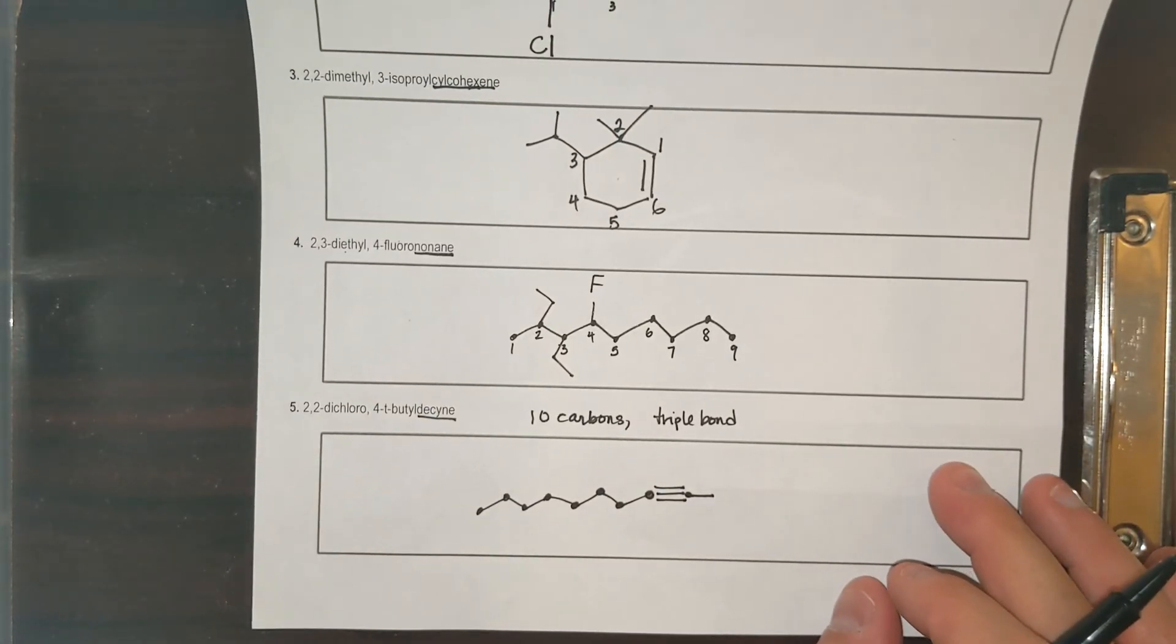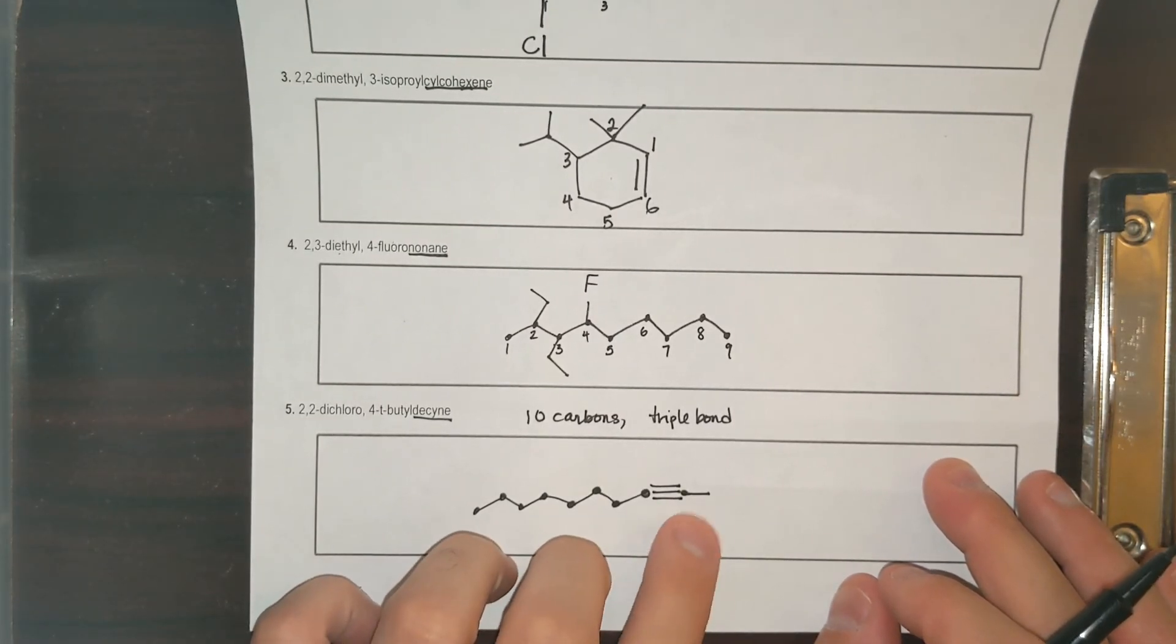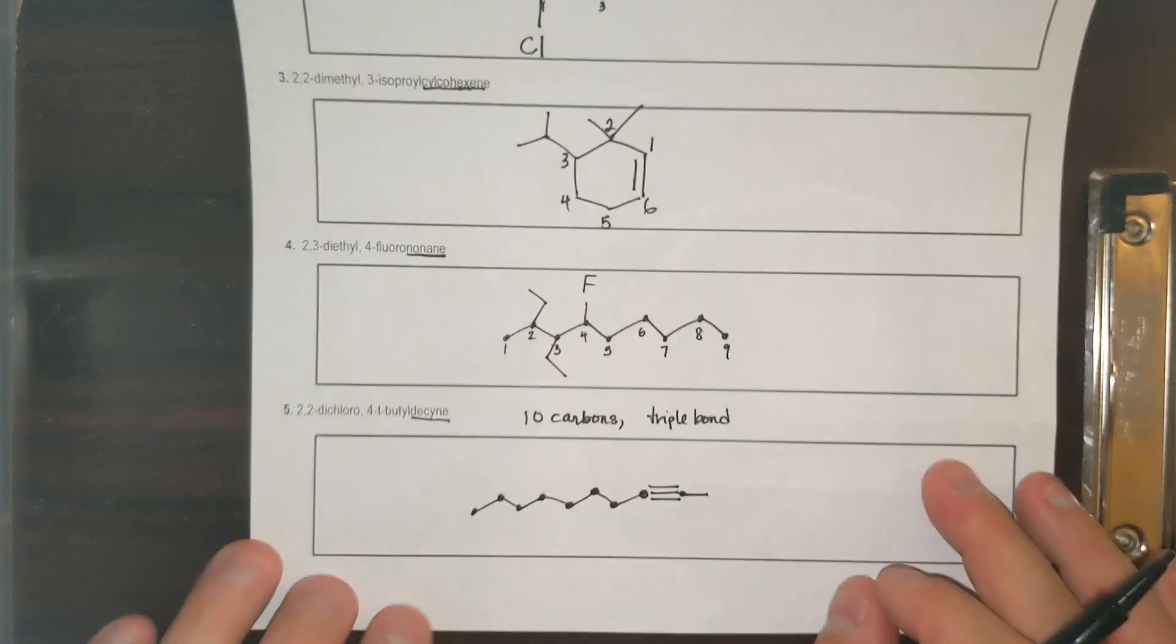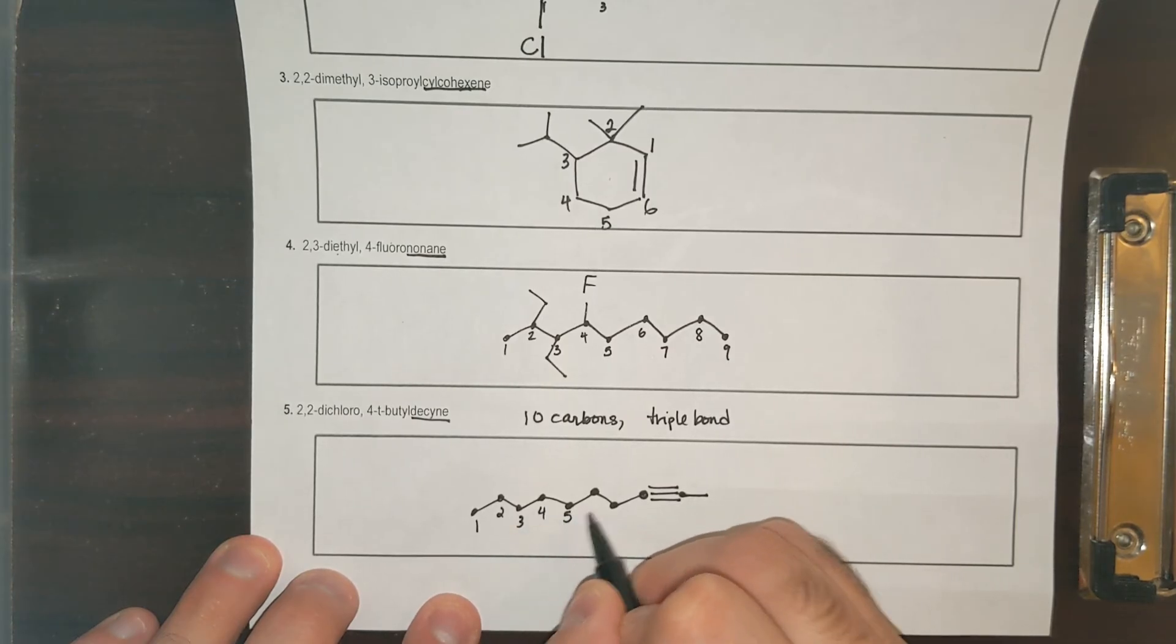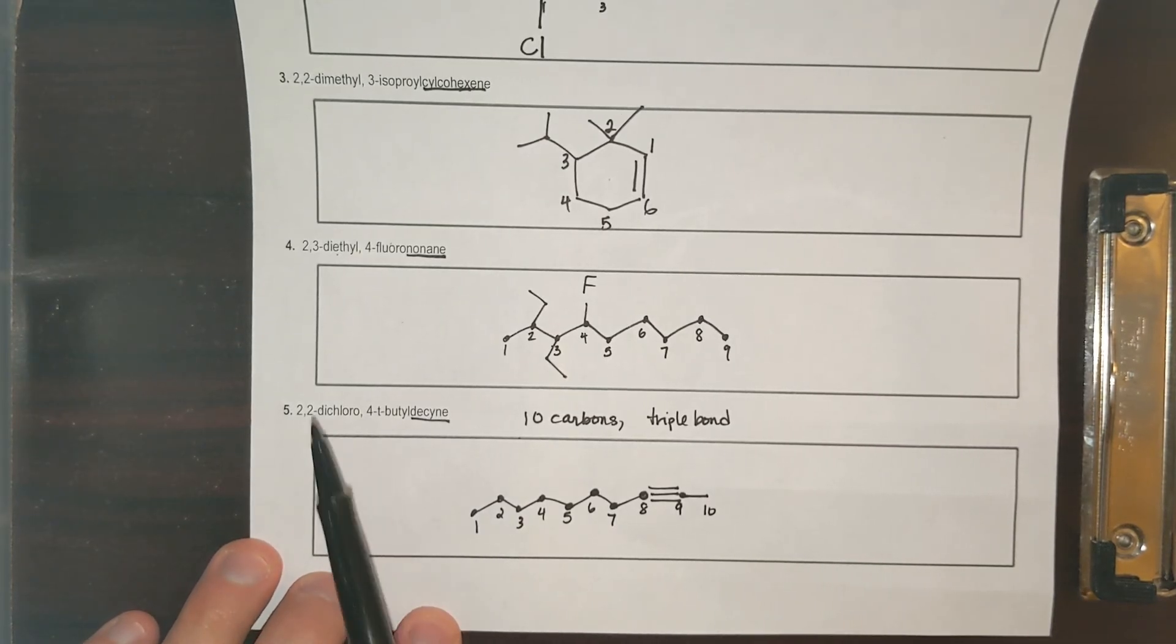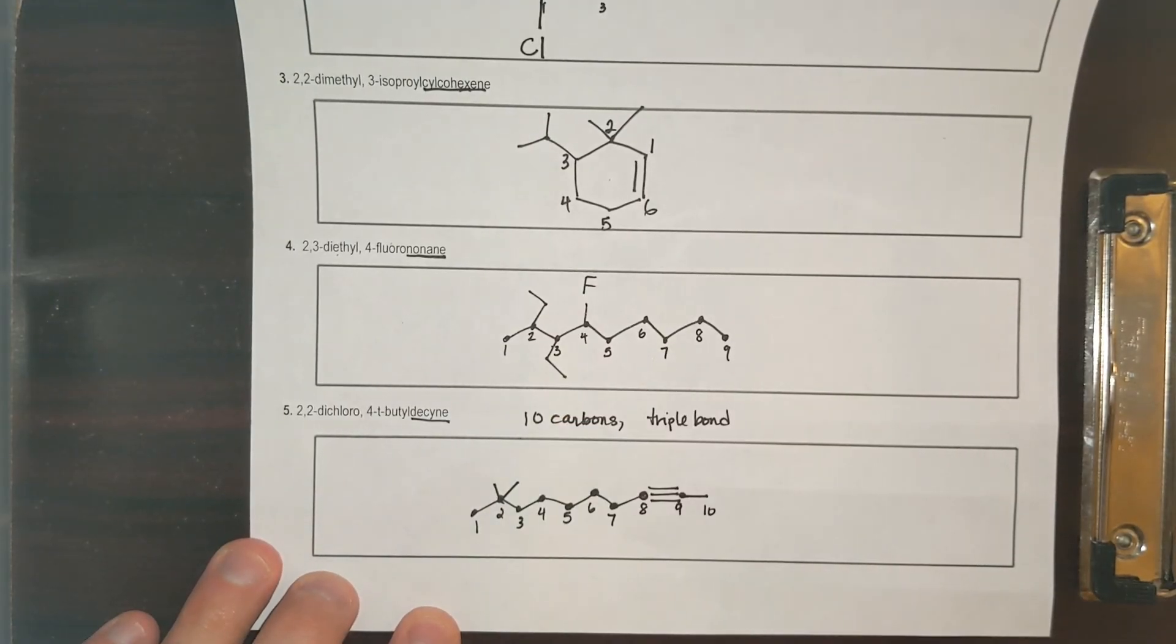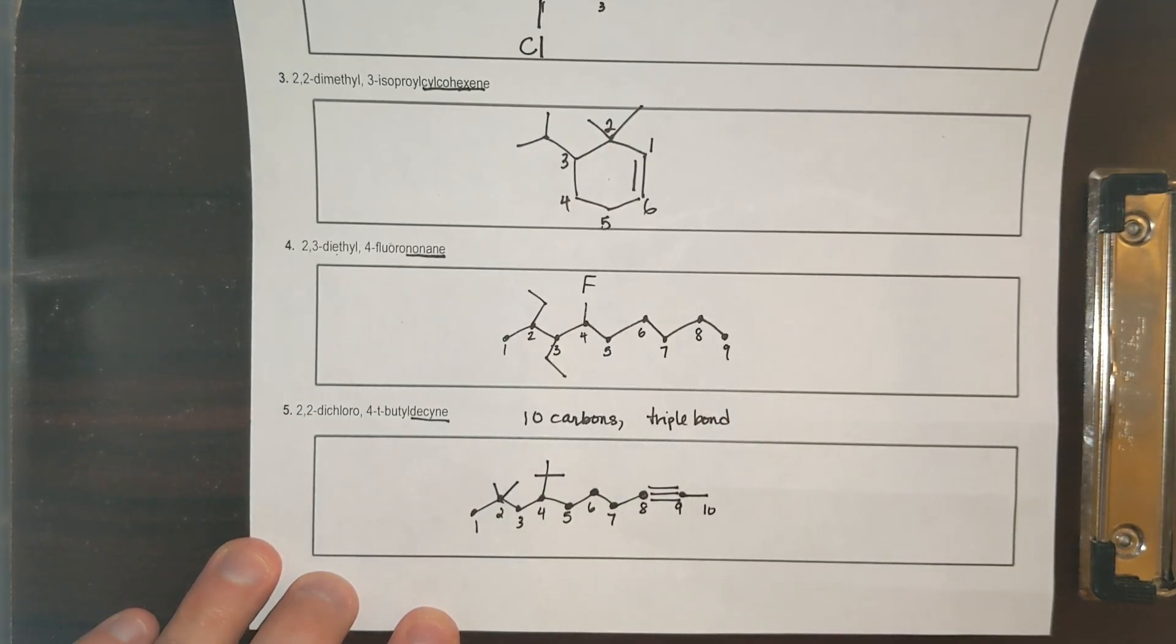Doesn't matter where you put the triple bond. Later on, we're going to number these a lot better. The counting is going to go around certain functional groups. But for right now, I'm going to number it any which way I want. One through ten, because I feel like it. And so I number it left to right. 2,2-dichloro, one, two dichloro. 4-t-butyl. Four, t-butyl. And then decaine, done.